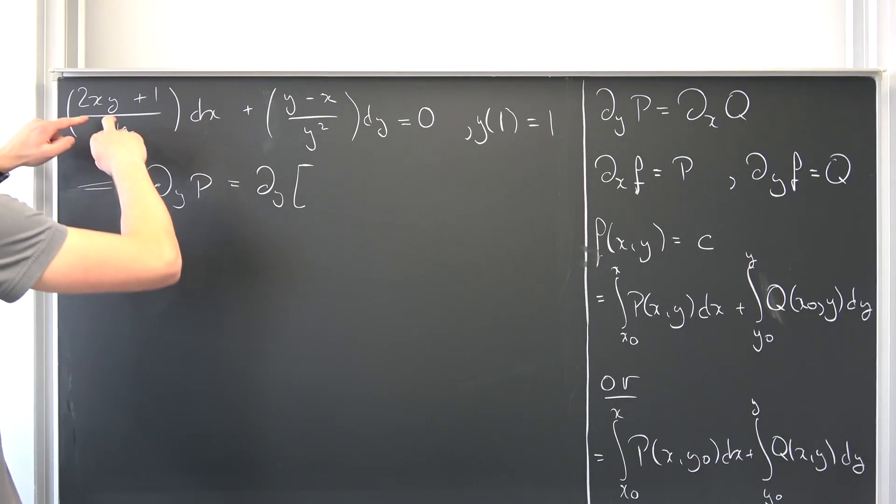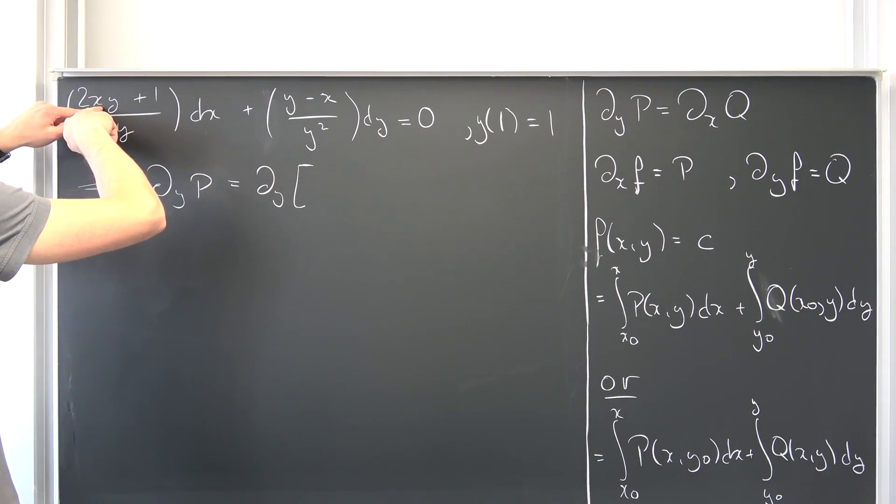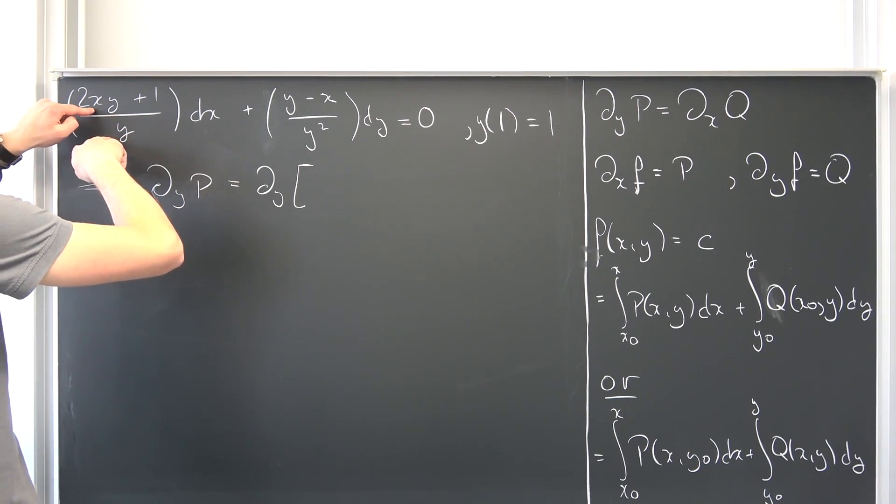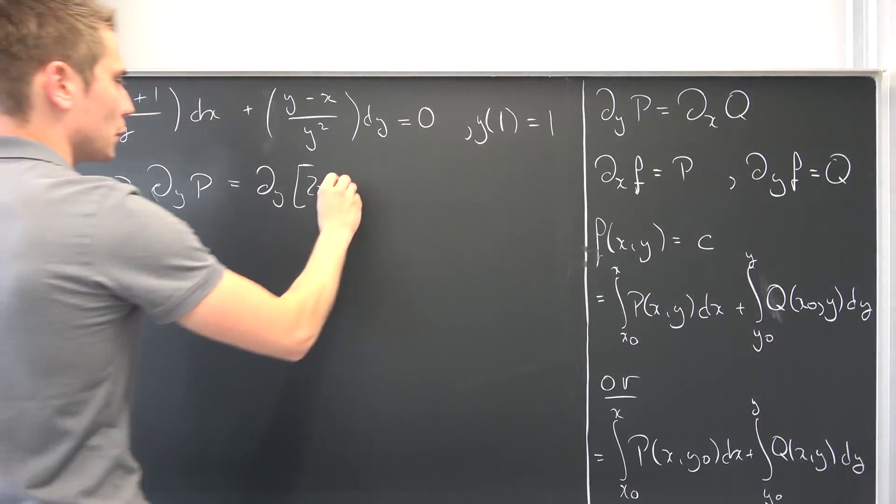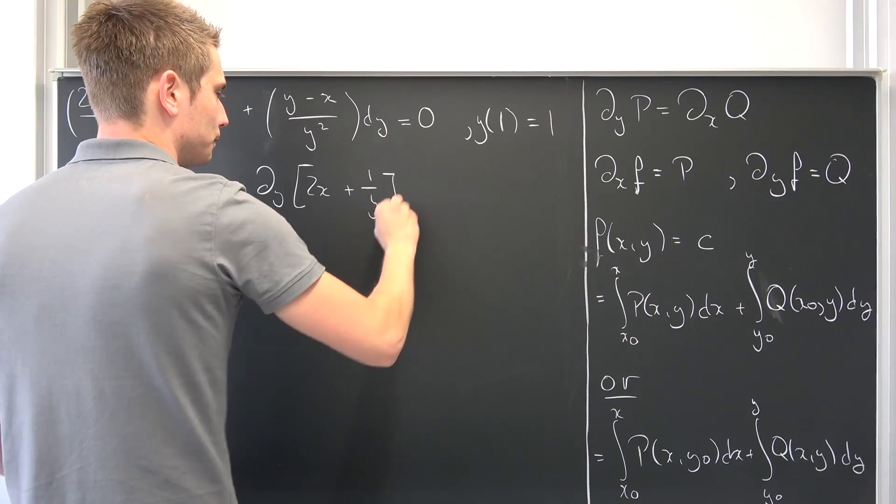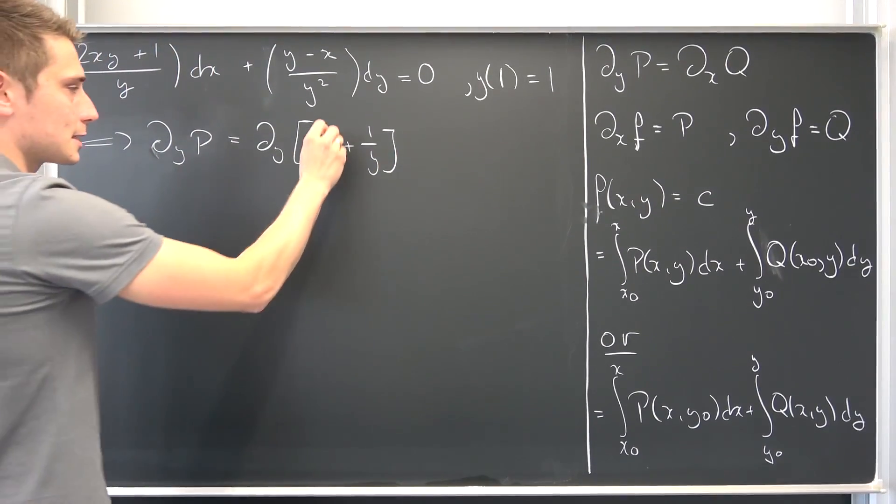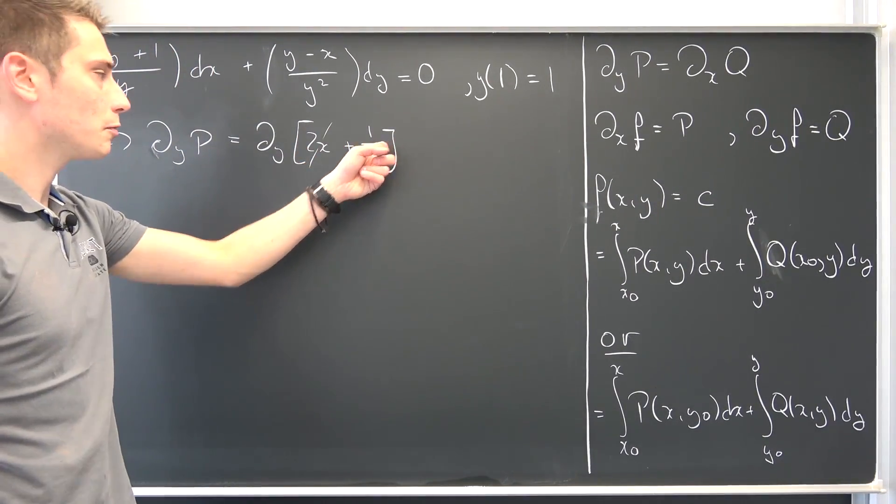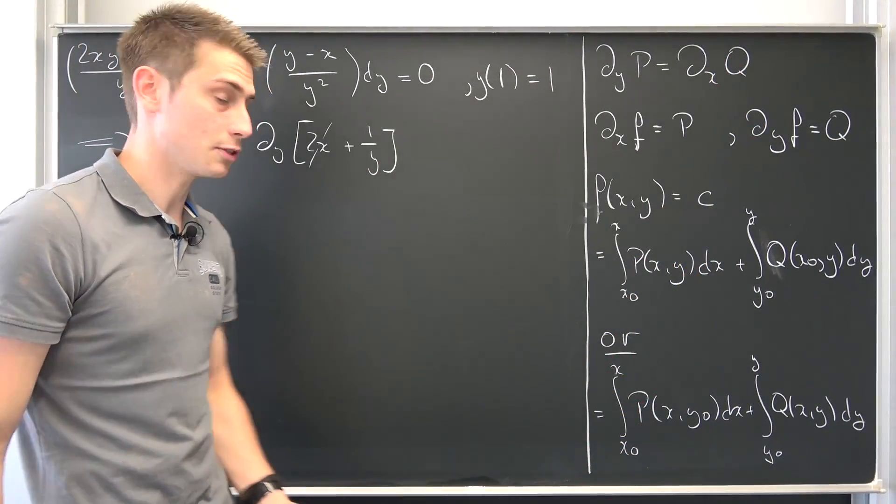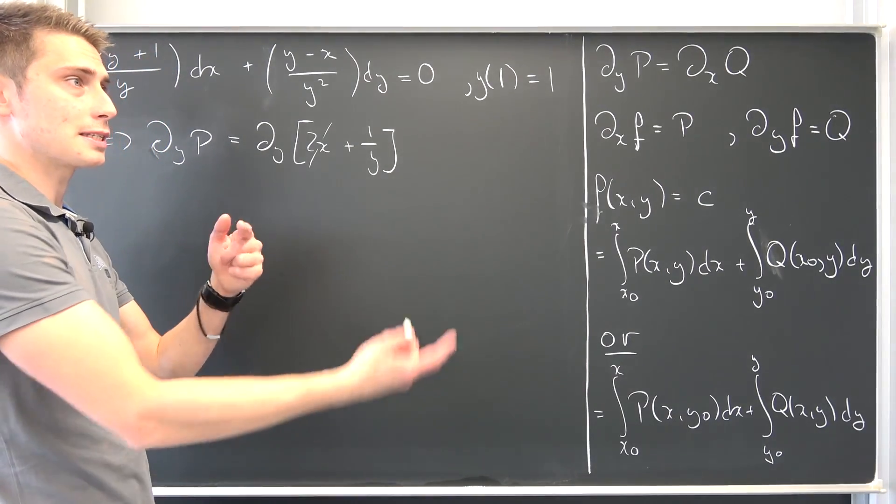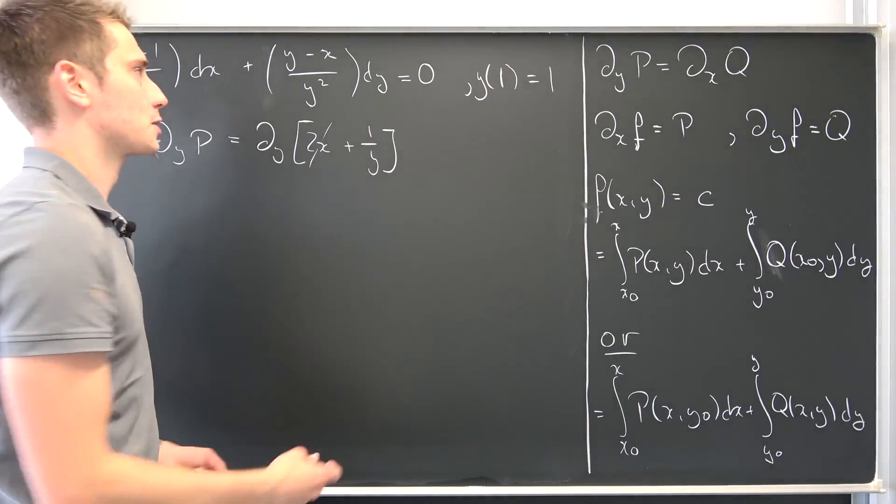Then we are going to get 2xy over y is going to give us 2x, this is going to vanish in the process, plus 1/y. This is going to vanish in the process, and 1/y differentiated with respect to y, this is y to the negative 1st power, giving us negative 1 over y squared.